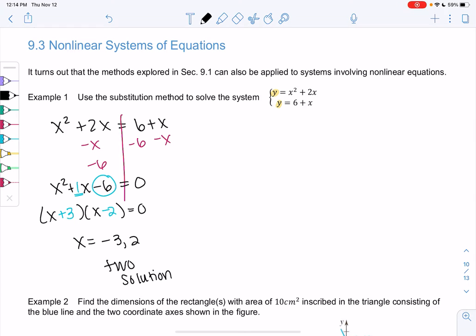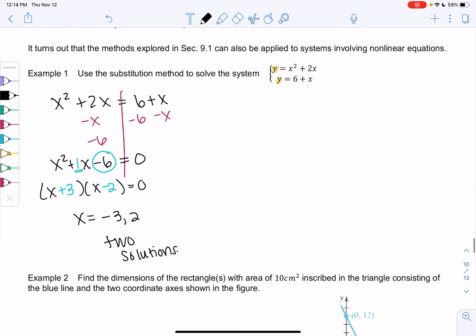And we'll graph after to check. So if x equals negative 3, then y equals, and I can use either one, 6 plus x looks easier to plug into me. So 6 plus negative 3 or 3. So negative 3, 3 is a solution.